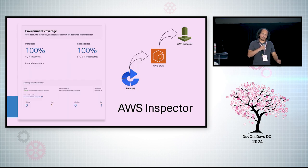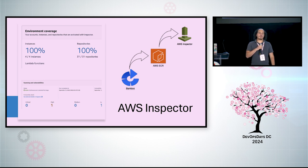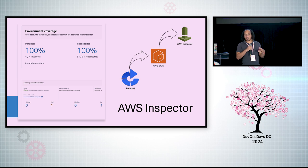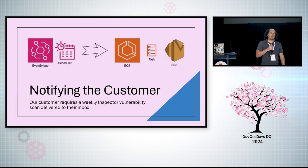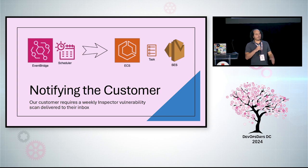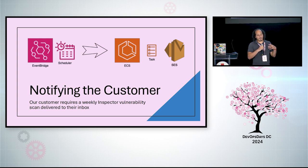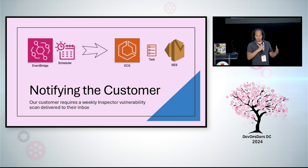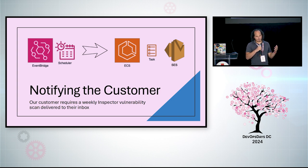In Bamboo, part of the deployment step is pushing the container image to the registry, and that kicks off an Inspector scan. Every Monday, we provide HHS with an Inspector report, and we've automated this by using EventBridge Scheduler. It kicks off an ECS task which generates the report and emails it over to them without us having to do anything.